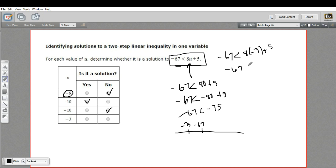Negative 67 less than 8 times negative 3 is negative 24 plus 5. So I can see this is going to work. Negative 67 is going to be less than negative 19. So that one works.